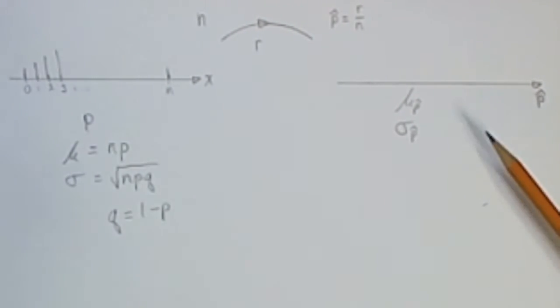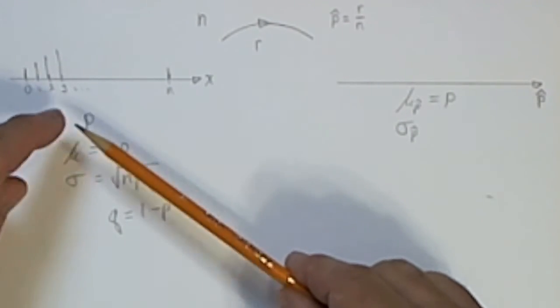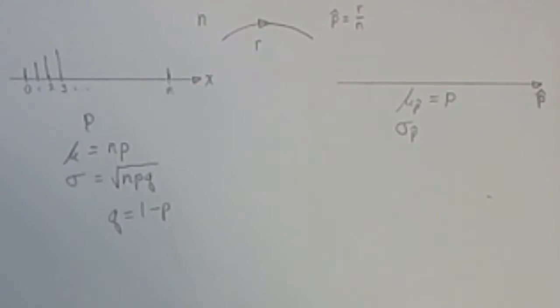I'll call the mean mu sub p-hat and the standard deviation sigma sub p-hat. The wonderful thing is the mean of this probability distribution will be this p, the original parameter we're interested in finding.